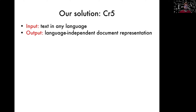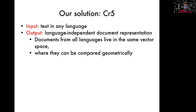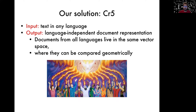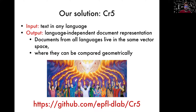Our solution is a method we call CR5. The input is text in any language, and the output is a language-independent document representation. The mapping we construct is from a bag of words into a vector space where all languages cohabitate — they live in the same vector space and become comparable geometrically. If you're less of a geometric thinker and more theological, you can think of this as a Pentecostal experience where people speaking different languages suddenly understand each other. Under the hood, of course, it's not the Holy Ghost but a lot of linear algebra.